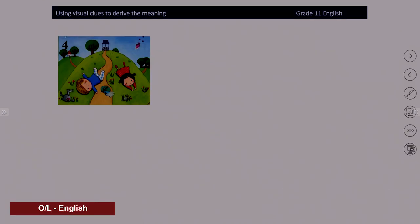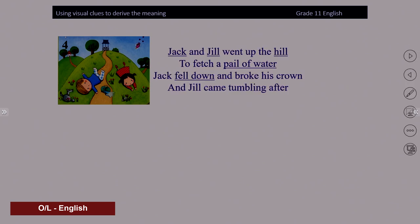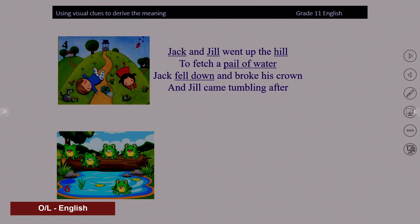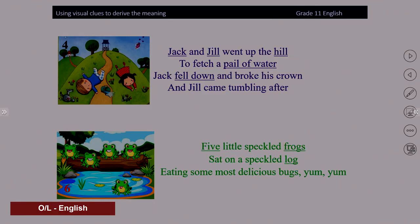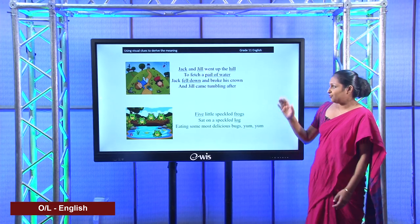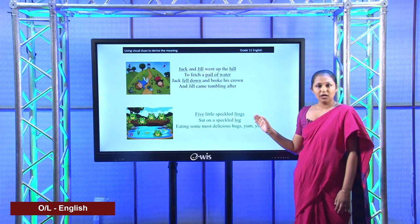Now we will look at picture four. Here, what can you see? It's Jack and Jill went up the hill. Now we will look at the fifth picture. You can see frogs — there are five frogs. The rhyme that goes with this picture is Five Little Speckled Frogs. Now I know you have a clear idea about understanding the text with the help of picture clues. If you have picture clues, you can easily get the meaning of the given words.